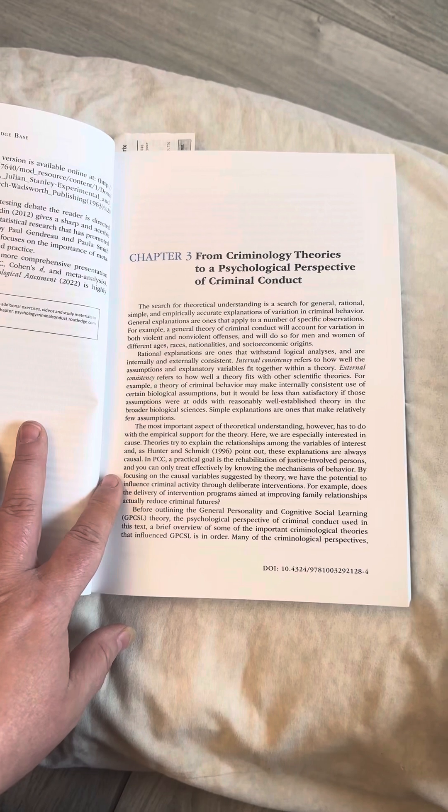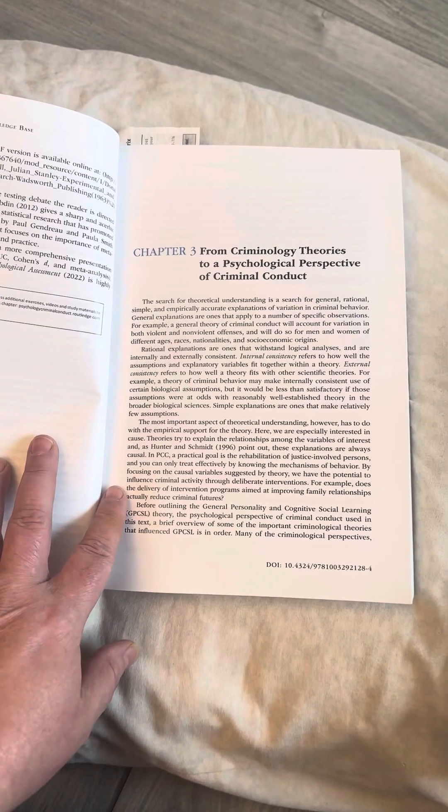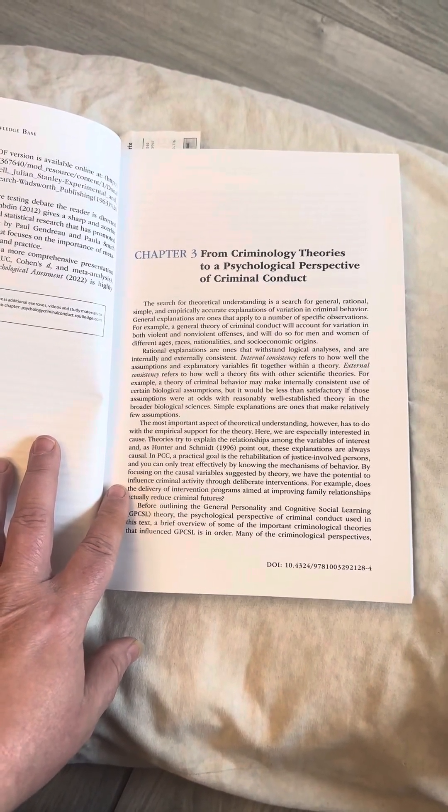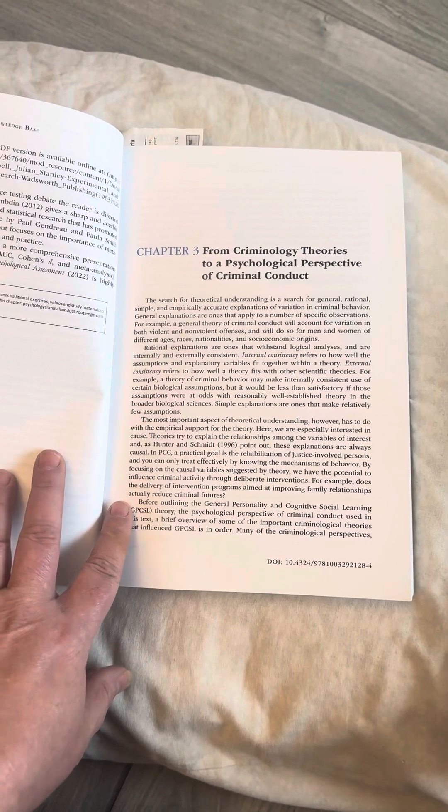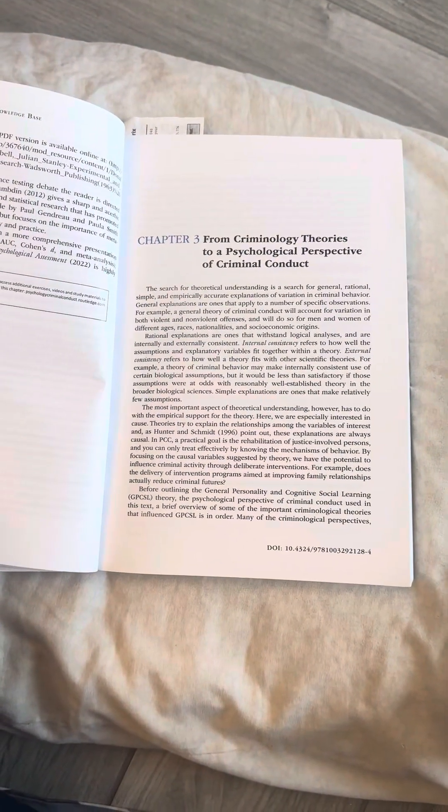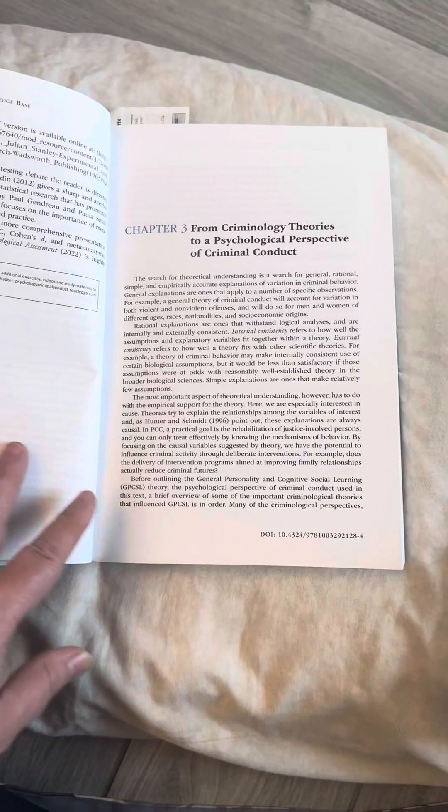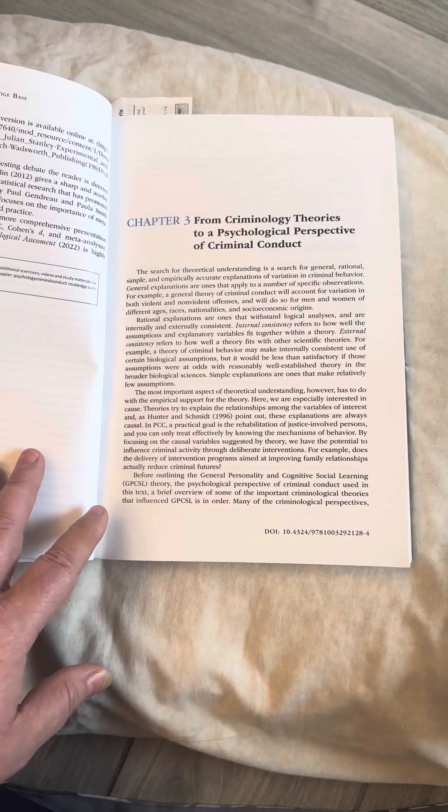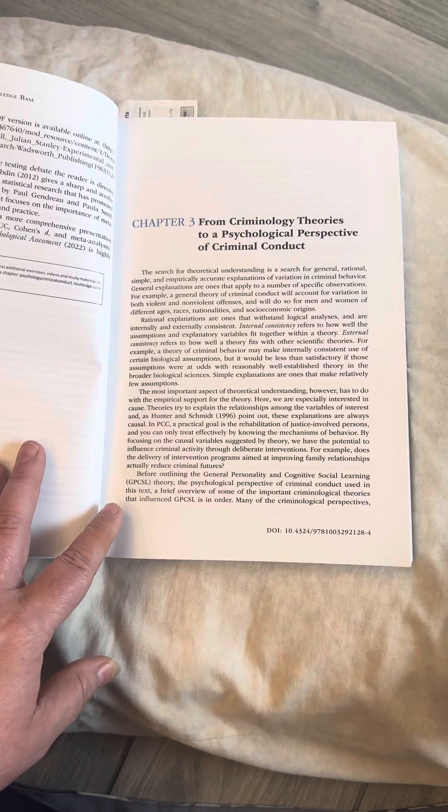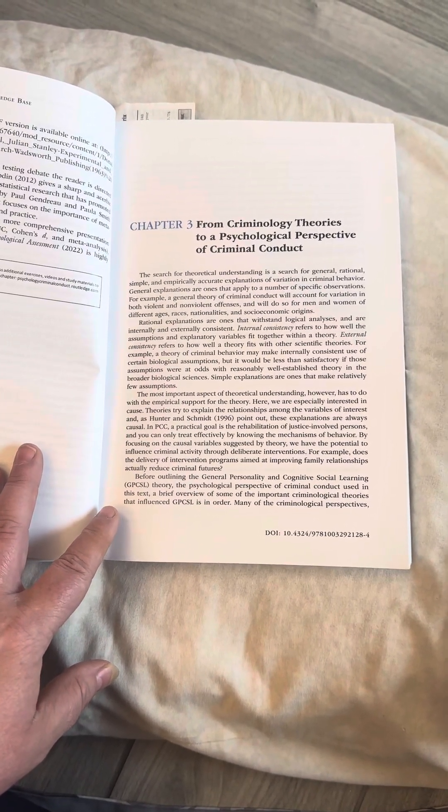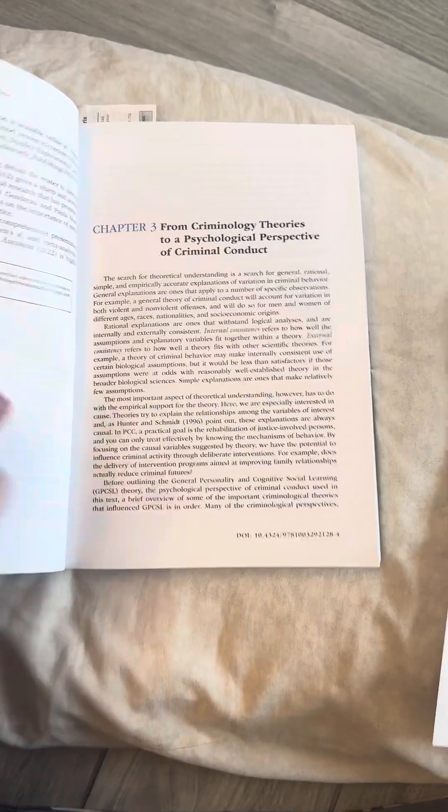In PCC, a practical goal is the rehabilitation of justice-involved persons. And you can only treat effectively by knowing the mechanisms of behavior by focusing on the causal variables suggested by theory. We have the potential to influence criminal activity through deliberate interventions. For example, does the delivery of intervention programs aimed at improving family relationships actually reduce criminal futures? Before outlining the general personality and cognitive social learning, GPCSL theory, the psychological perspective of criminal conduct used in this text, a brief overview of some of the important criminological theories that influence GPCSL is in order.